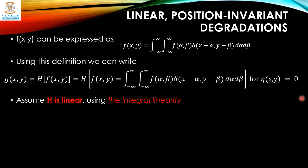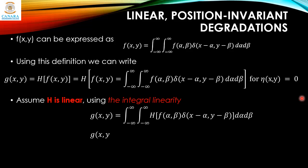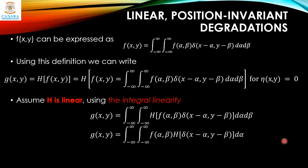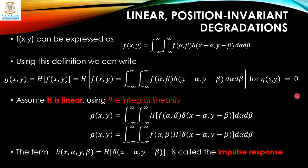Assuming h is linear and using the linearity of the integral, we can write g(x,y) as a double integral of h[f(α,β)·δ(x−α, y−β)] dα dβ. Simplifying further, g(x,y) equals the double integral of f(α,β)·h[δ(x−α, y−β)] dα dβ. The term h[δ(x−α, y−β)] is called the impulse response.